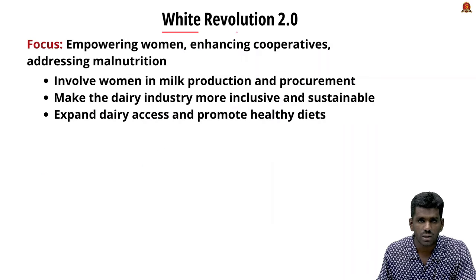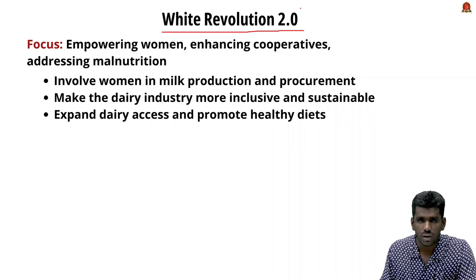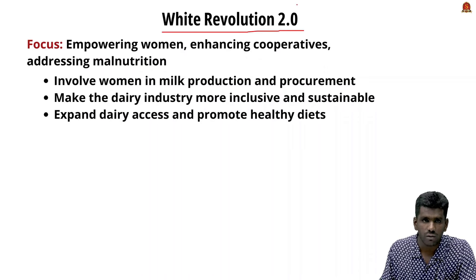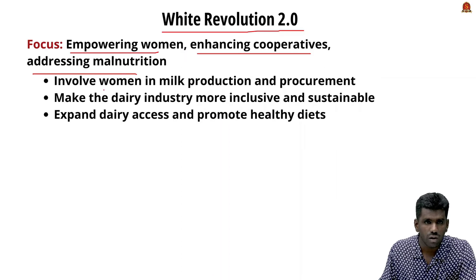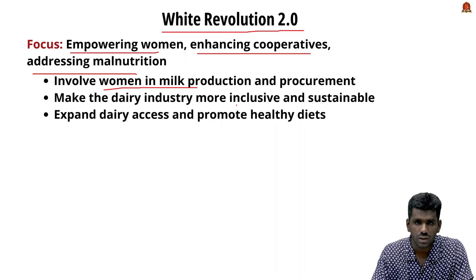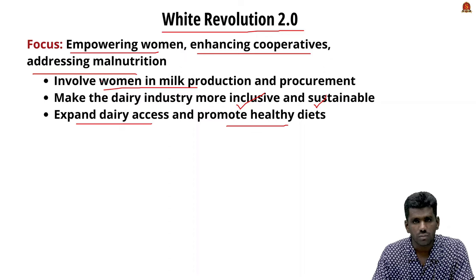White Revolution 2.0, introduced by Union Minister Amit Shah, builds on the first revolution's success in increasing milk affordability and availability. It will focus on empowering women, enhancing cooperatives, and addressing malnutrition by involving women in milk production and procurement, making the dairy industry more inclusive and sustainable. It also aims to expand dairy access and promote healthy diets.